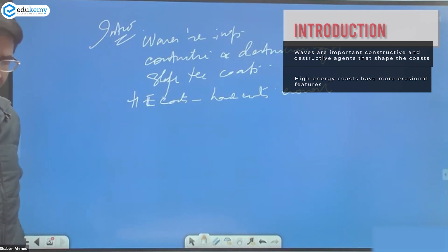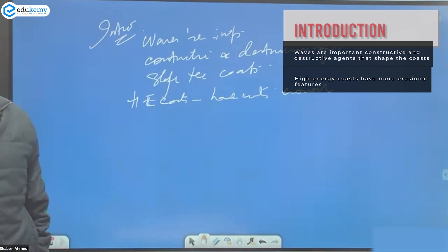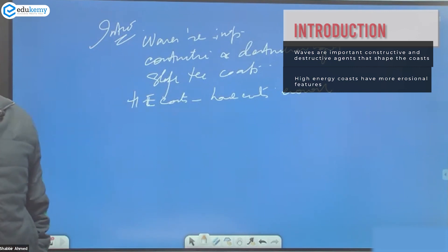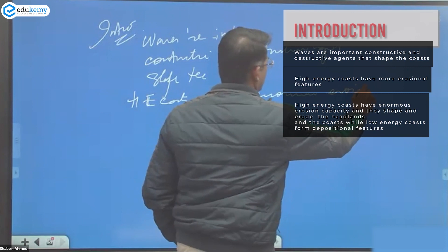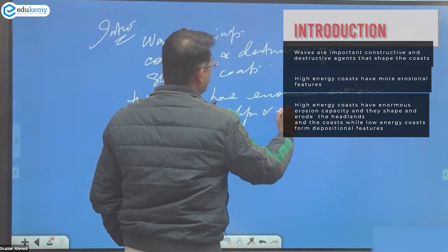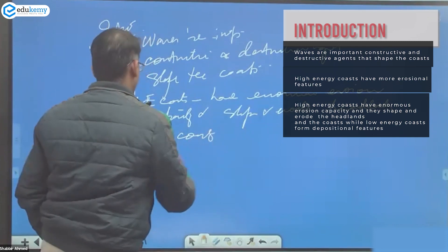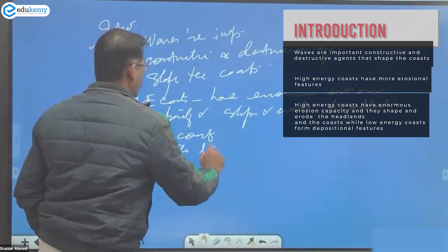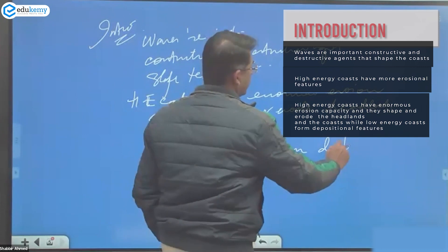Use some technical words - smart, good concepts - in the answer. A non-geography student will not know what a 'high energy coast' is. Any coast with strong waves and strong winds has more erosion. High energy coasts have enormous erosion capacity and shape and erode the headlands and coasts, while low energy coasts form depositional features.